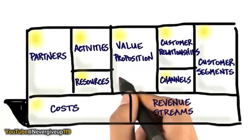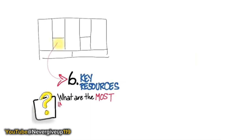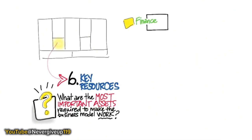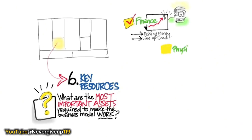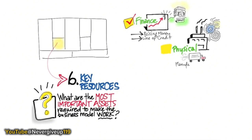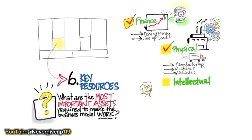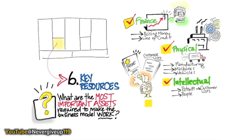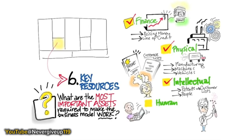The next piece is key resources — what do you need to make the business model work? What assets are important? Finance: do you need capital, a line of credit? Some assets are physical: do you need manufacturing lines, specialized machines, vans for delivery? Is there intellectual property or patents you need to acquire or protect? Do you need to acquire customer lists? Or do you just need great people — software programmers, hardware designers, or manufacturing experts? The interaction between intellectual and human capital is another key resource: what specifically do you need to do to keep these people, and who are they?